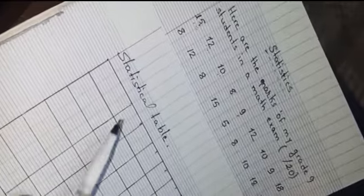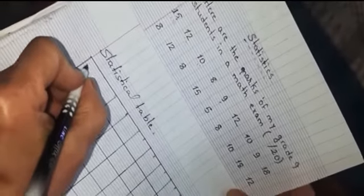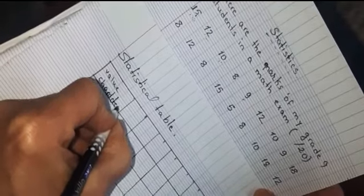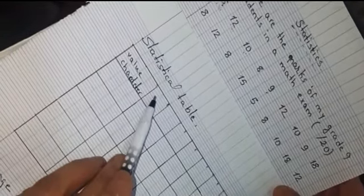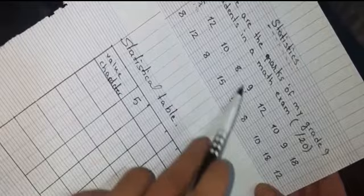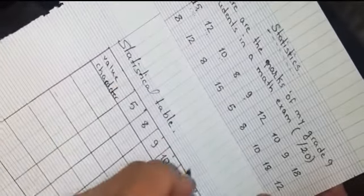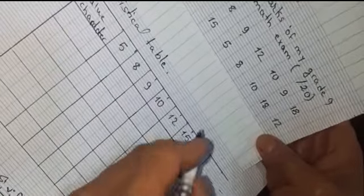Now I'm going to construct a statistical table. The first column must include the value or character. I arrange them in increasing order from the least to the highest. The least value is 5, then 8, 9, 10, 12, 15. The last value is 18. And in the last row, I put total.